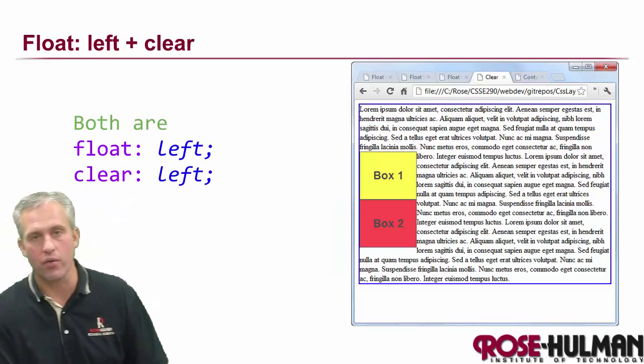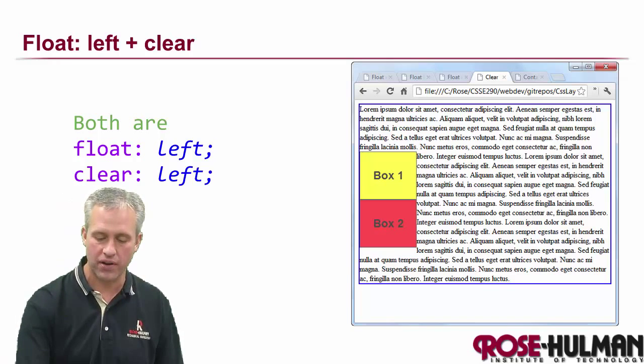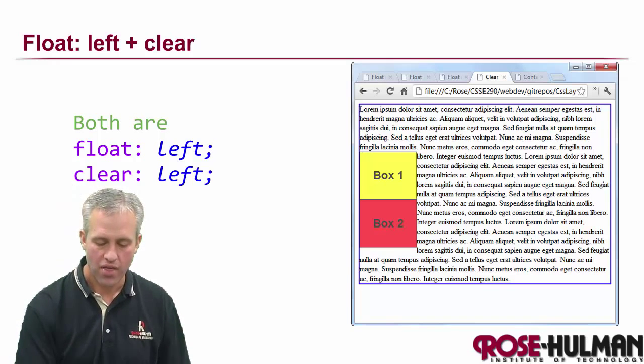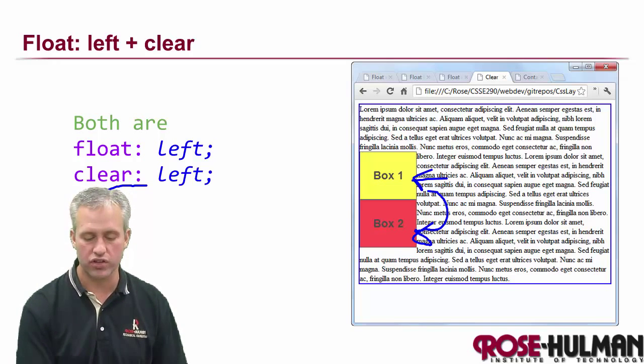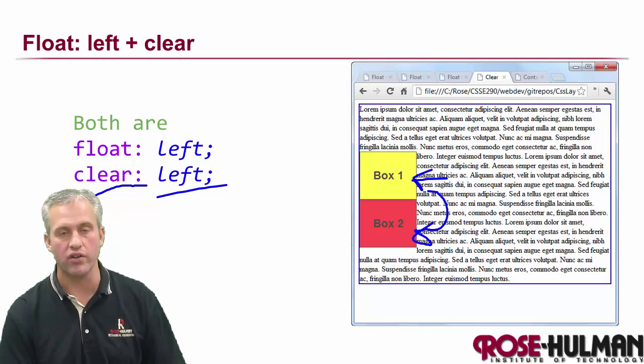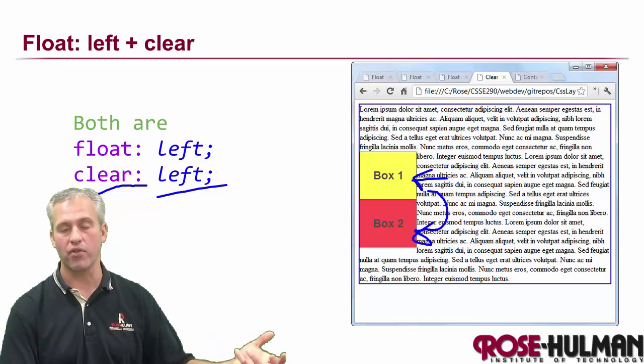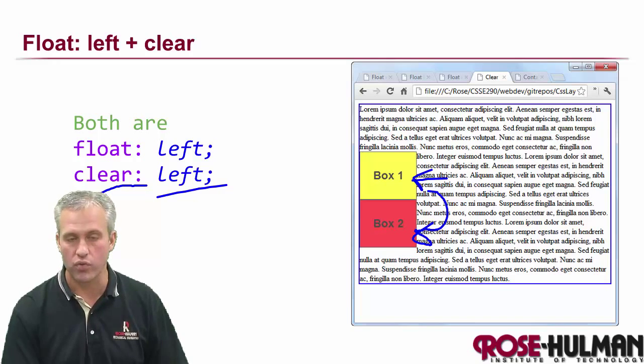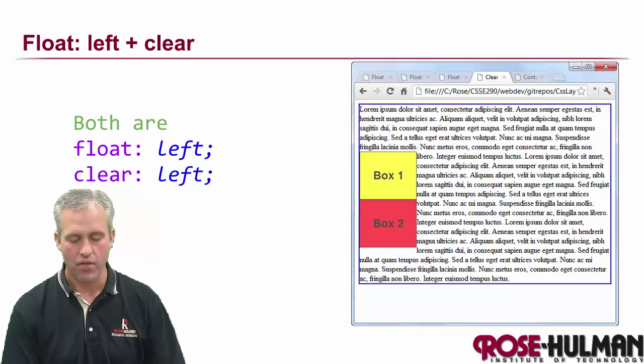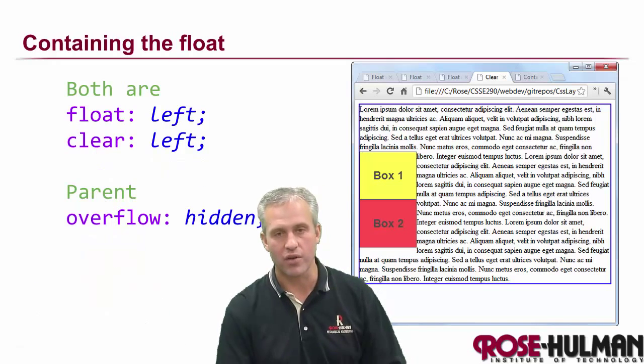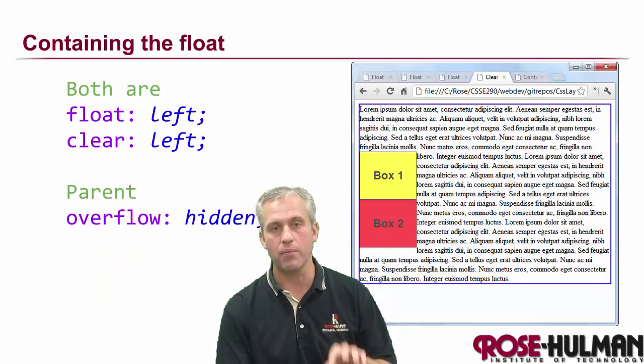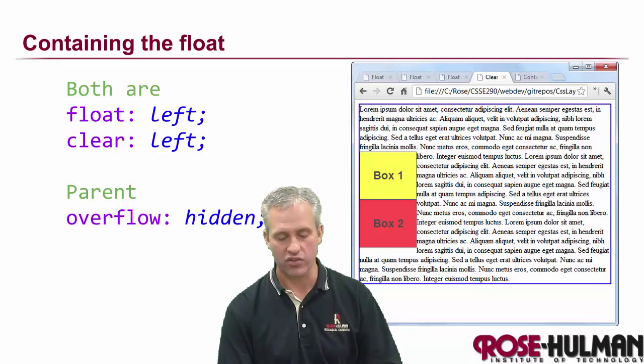Other things I should tell you about with floats is that there's another property called clear that says whether you want the next float to slam up next to you or whether you would like for the next float to be on the next line. The clear property could say clear left, don't let anybody be on the line, clear right, or clear both. There's a lot of interesting things going on with clear and float. I could talk about it, but I think examples are better, and the exercises are better.